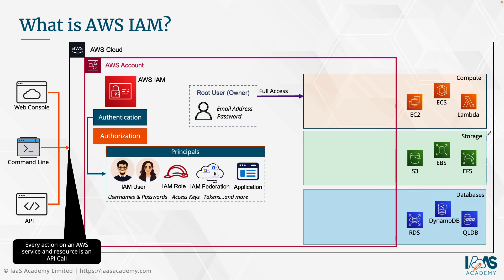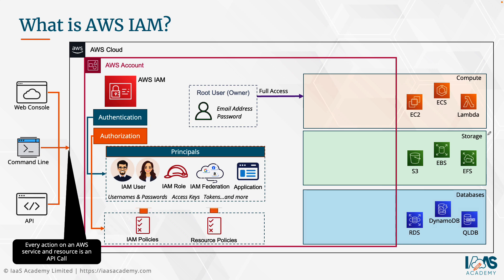Now, even though your principals have been authenticated on the platform, you still need to decide exactly what it is that those principals will be able to do — what those IAM users will be able to do, what that application can do on the AWS platform. This is where authorization comes into play. Authorization is the second component of AWS IAM that allows you to define permissions in the form of policies. These can be IAM policies, and we also have something called resource-based policies, which will be covered in another video. Essentially, you need to grant your principals the necessary permissions in order to do certain tasks on AWS.